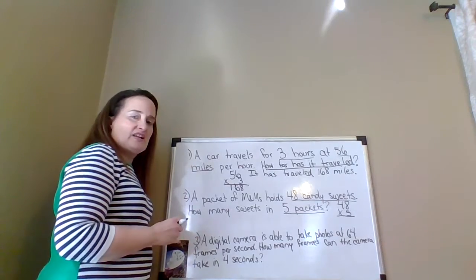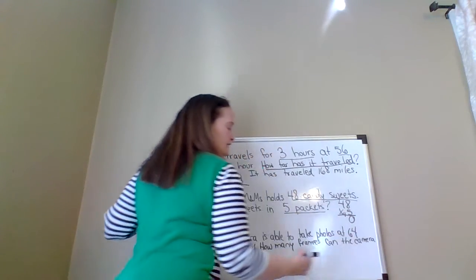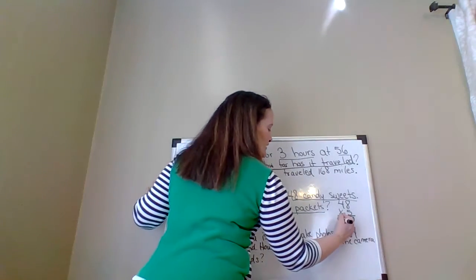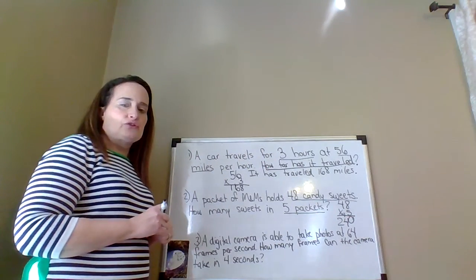5 times 8 is 40. We put the 4 in the tens place and the 0 in the ones place. 5 times 4 is 20 plus 4 is 24. So our answer is 240.